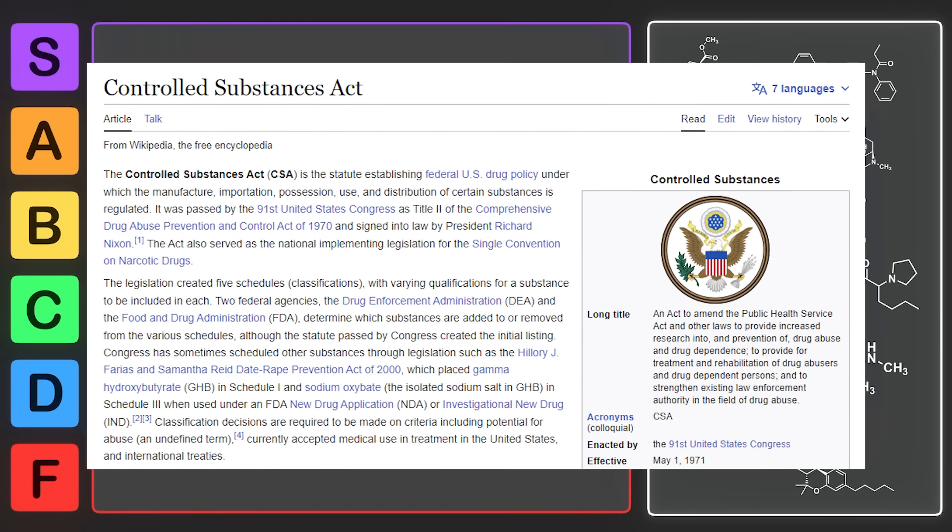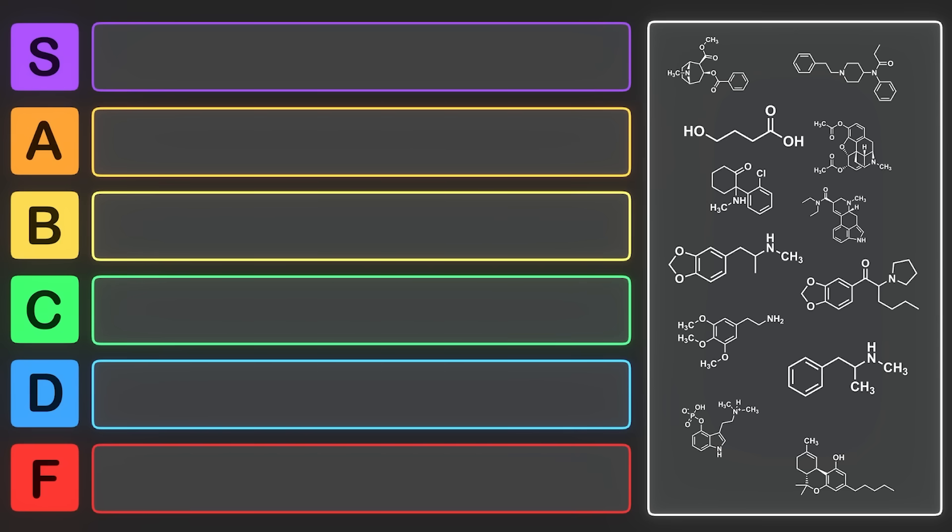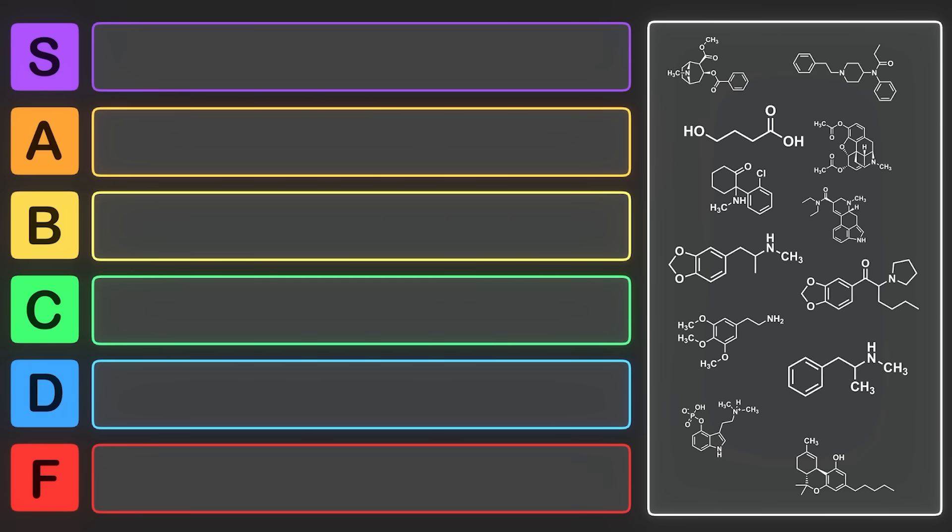The Controlled Substances Act is a federal law in the United States that regulates the manufacturing, importation, possession, use, and distribution of certain drugs. It was passed in 1970 to combat drug abuse and dependence. The Controlled Substances Act classifies drugs into five schedules based on their potential for abuse, medical use, and safety. The CSA also outlines the process for adding or removing drugs from these schedules and is influenced by international treaties. The law has undergone multiple amendments over the years to adapt to changing circumstances.